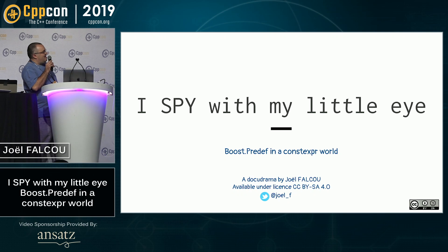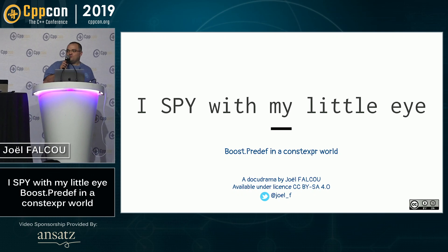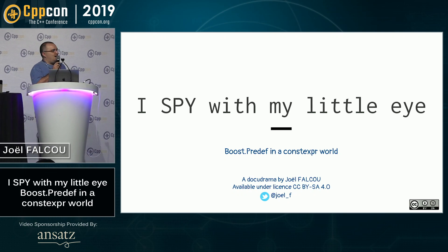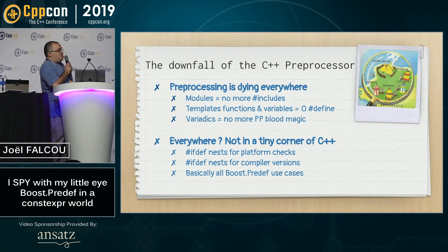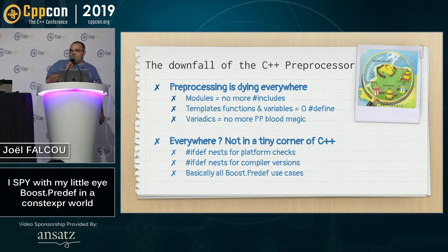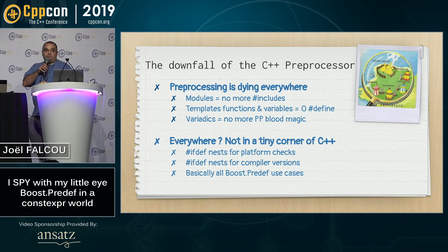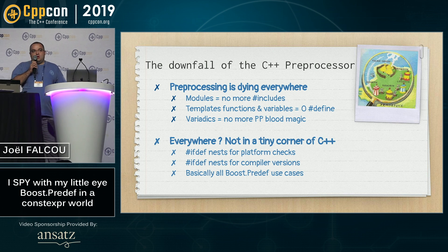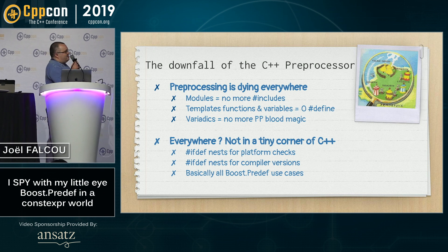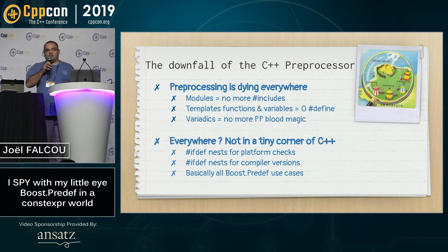This is a talk about definitely getting rid of the preprocessor everywhere it's tried to hide. The C++ preprocessor is on its way to being a thing of the past, like it should be. We have modules which should get rid of includes, we have template functions and variables so macros and macro functions should not be used anymore, and we have variadic templates so we don't have to sacrifice code to get multiple-parameter functions to work correctly.